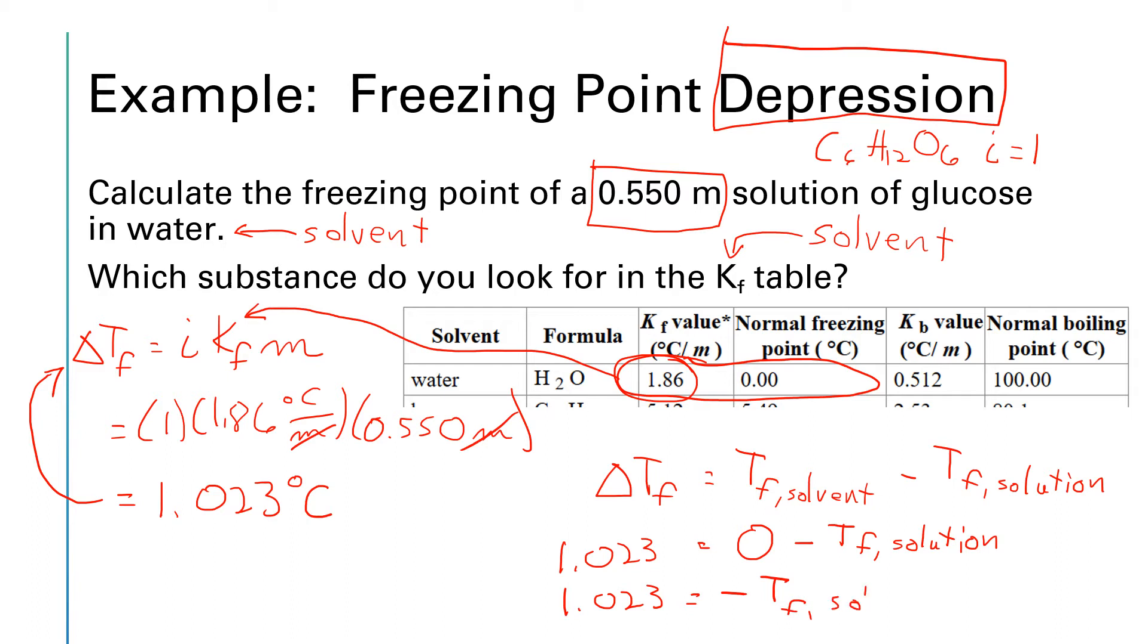Cleaning this up a little bit we have that 1.023 is equal to minus T sub f of the solution. And flipping the sign on both sides of that equation leads us to T sub f of the solution is negative 1.023 degrees C.